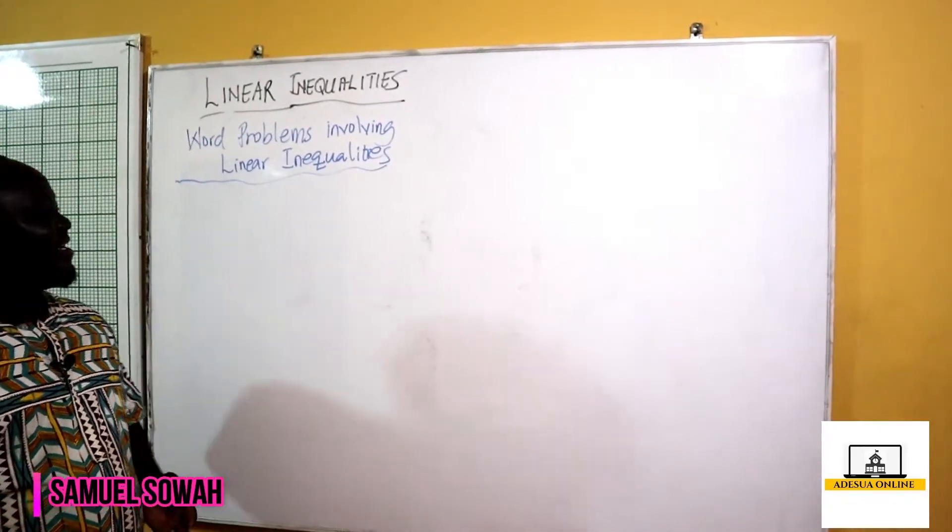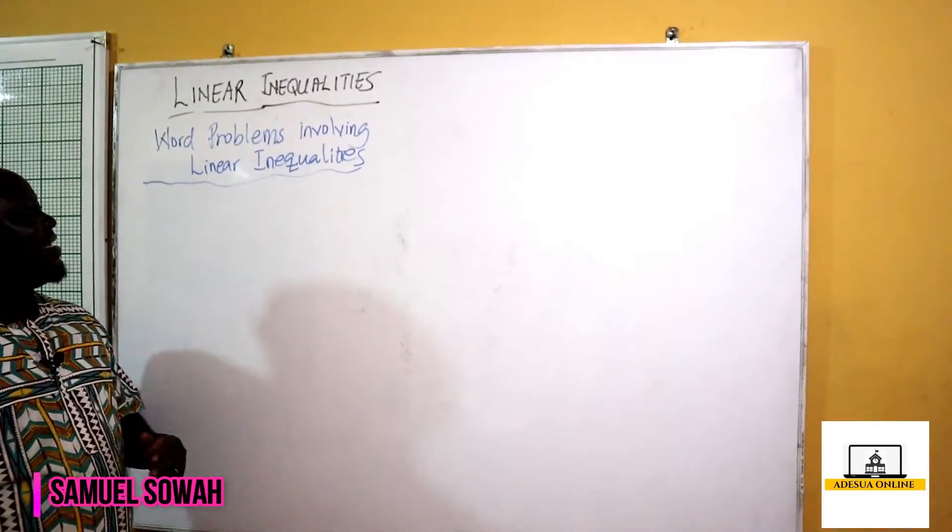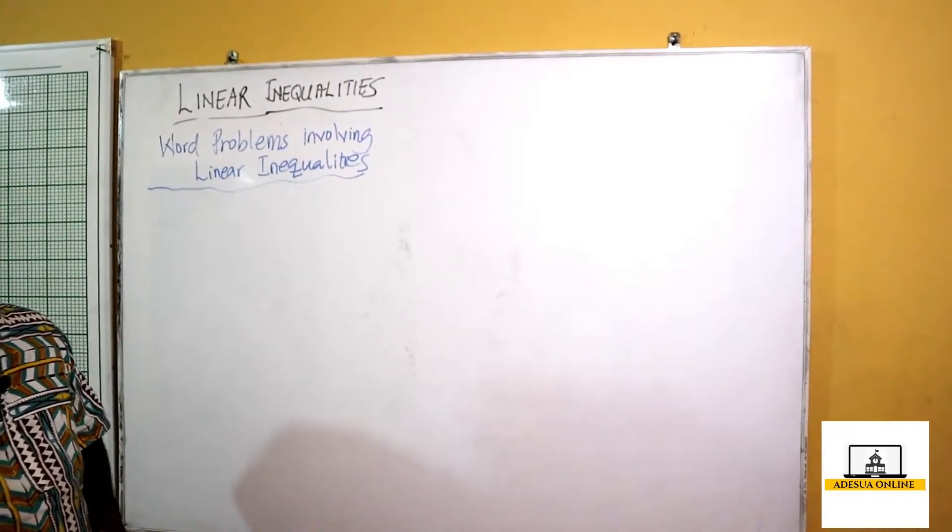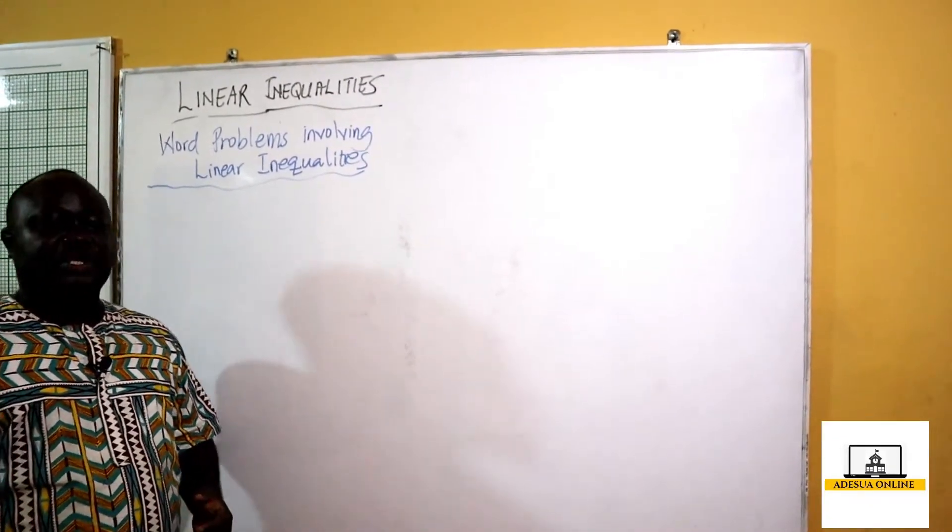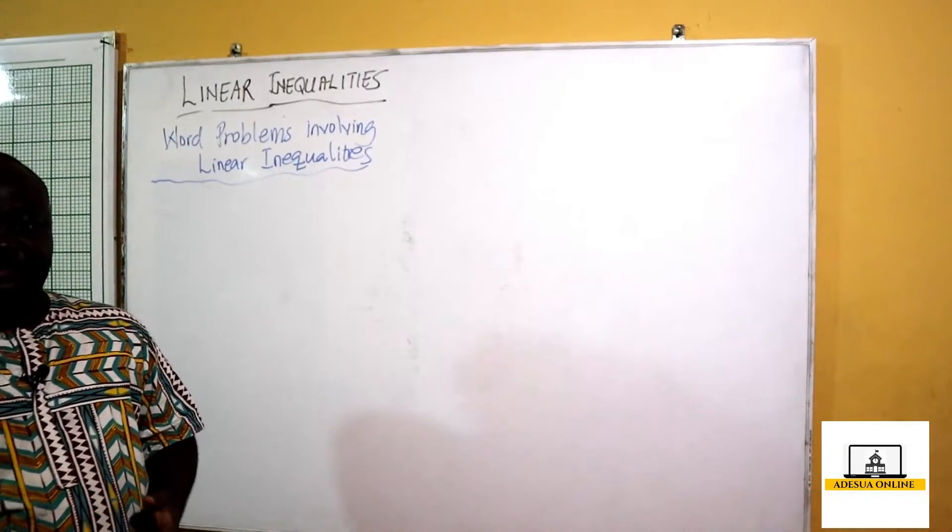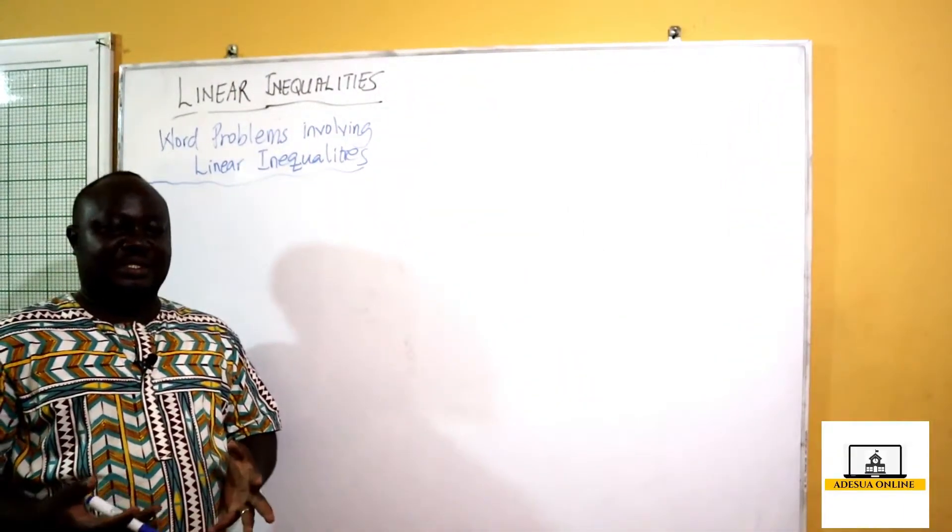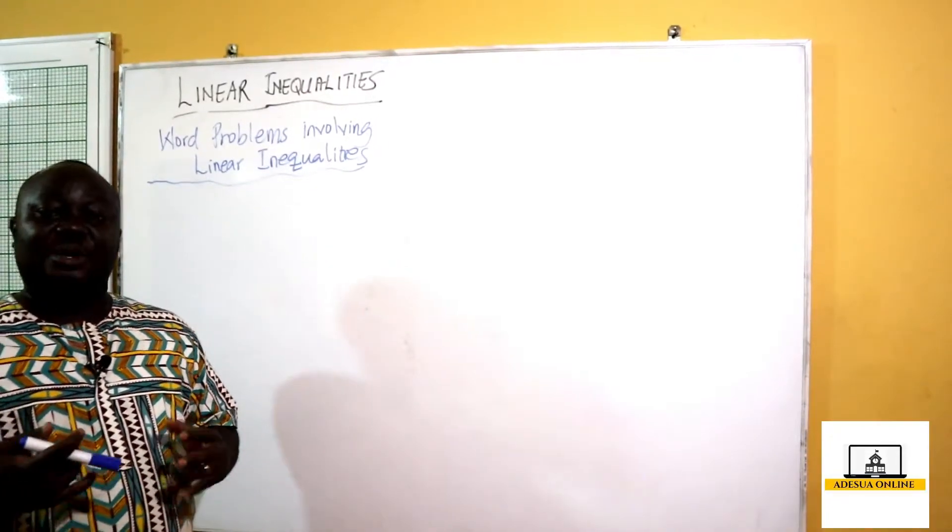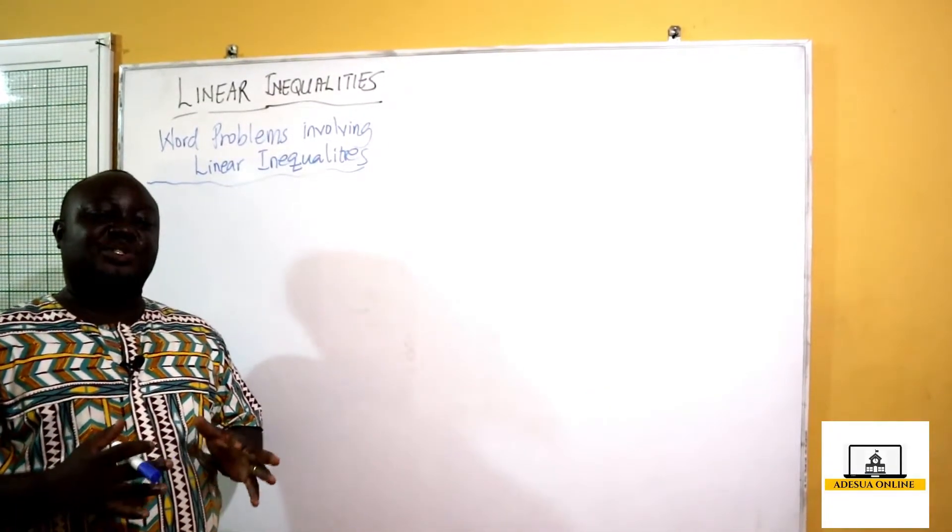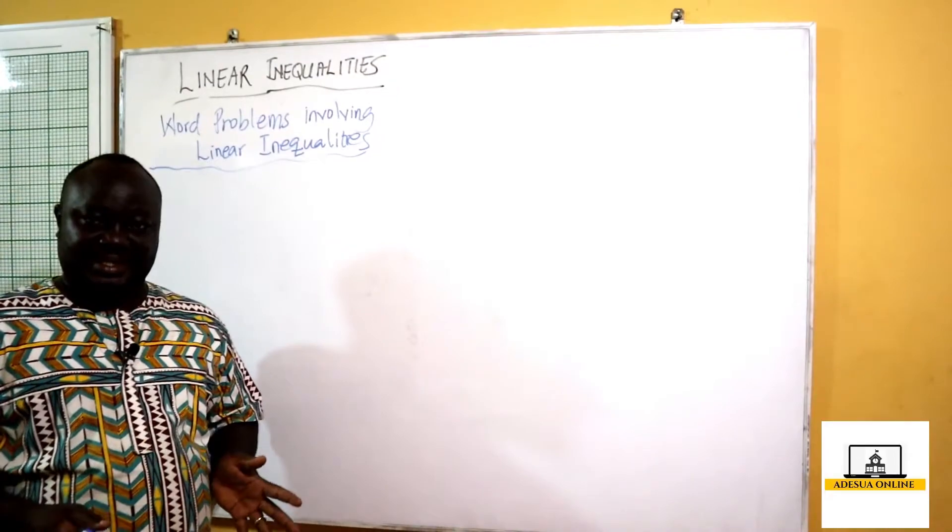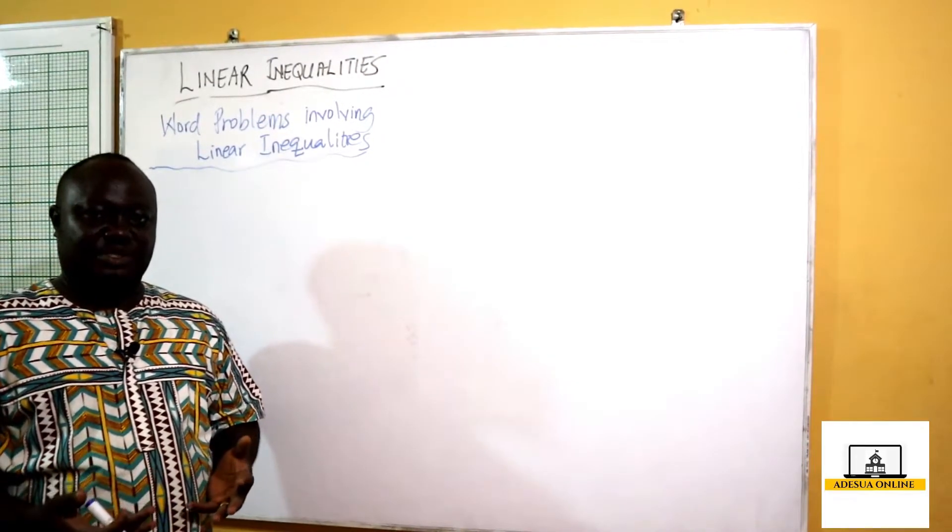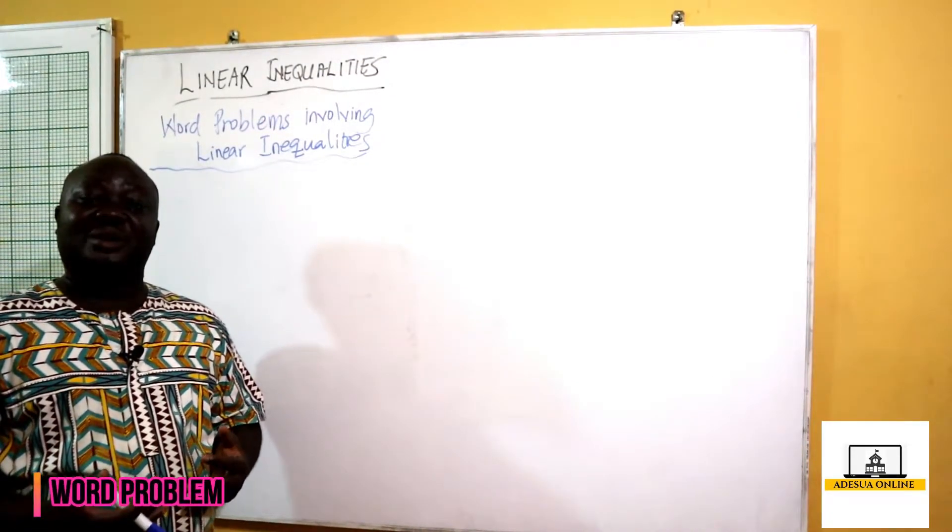So our next topic is word problems involving linear inequalities. When you are given a word problem, let's say you are told a variable is added to this, normally we like to assume that the variable is x. That's the first thing we assume. So our variable, or whatever we have been asked to find, we're going to name it x.